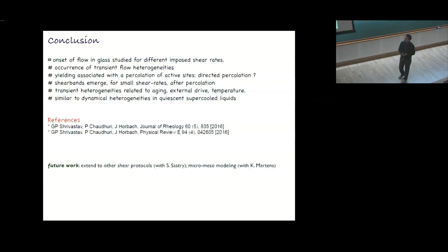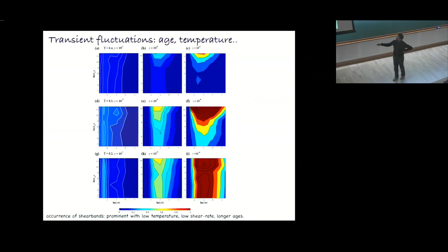The percolation happens for all imposed shear rates, all ages, at least if the age is sufficiently large. But the shear bands only are more prominent for more aged samples at smaller shear rates. This is a distinction that one should make. This is more or less what we have done in this work so far. We are now trying to extend this to other shear protocols. Srikanth will talk about oscillatory shear. We are also interested in micromeso modeling, which would be some multiscale modeling. Just a side remark: the editors of Journal of Rheology liked this picture so much that they made it the cover page. We are quite happy. Thank you.